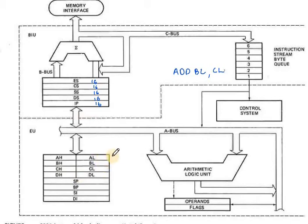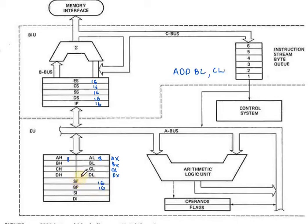The registers are 16 bits total. We represent the general-purpose register pairs AX, BX, CX, and DX. Each has a higher byte and a lower byte. We also have SP (Stack Pointer), BP (Base Pointer) — these are 16-bit registers introduced as stack segment index and offset address registers. Then we have Source Index and Destination Index, which are also 16-bit registers.